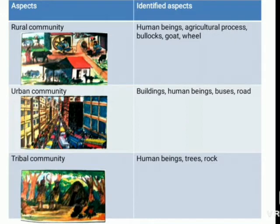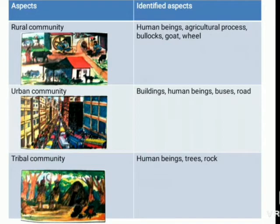Rural community: human beings, agriculture, bullock carts, and wells — as you can see in the poster, these are the kinds of occupations found there. Urban community: buildings, human beings, buses, roads — you will find facilities like buildings and transportation. Tribal community: human beings, trees, and rocks, because they stay in forest areas.